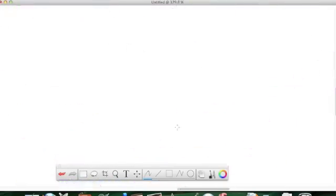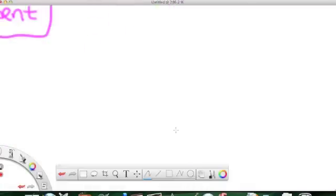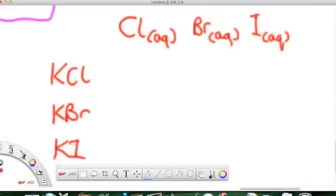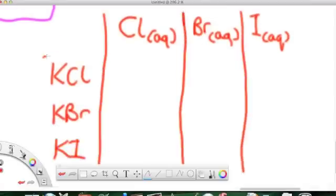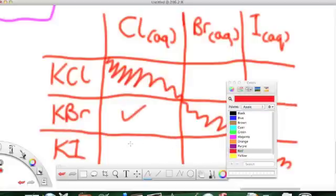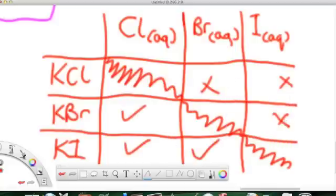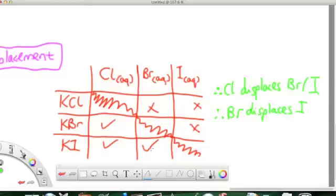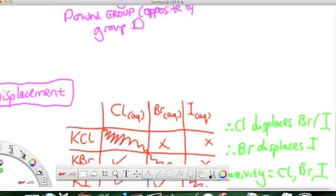Iodine forms a purple gas, bromine forms a reddy orange gas as well. And this table is being drawn to show you displacement reactions of salts, such as potassium chloride, potassium bromide, and so on, with aqueous versions of the group 7 elements, chlorine, bromine, and iodine. And we see that chlorine displaces the bromide and iodide ions in the salt. Bromine displaces the iodide ion in the salt. And therefore, we can say that chlorine is the most reactive, followed by bromine, followed by iodine.